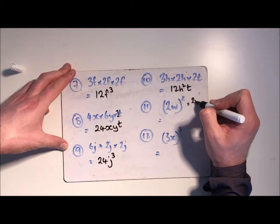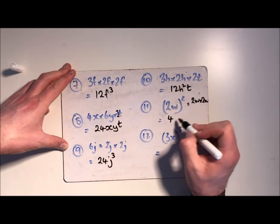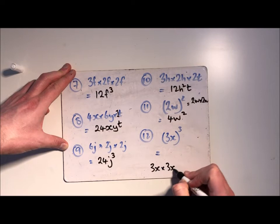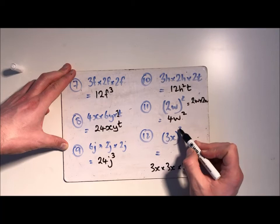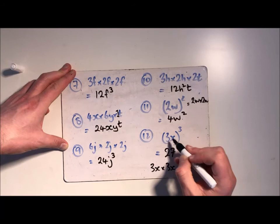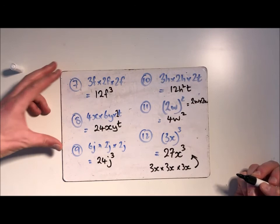This one again is like the ones we had earlier on. This is technically 2w multiplied by 2w. 2 twos are 4 and then w multiplied by w is w squared. Here again I could write this out the long way but to be honest you really don't want to be doing this because it makes the question much longer, so you just do 3 cubed. So 3 threes are 9 and then 9 times 3 is 27, and then x times x times x is just x cubed, but that would give you the same answer as well.